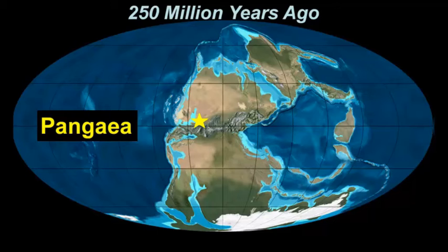The line right through the middle going up and down is the prime meridian. The line right through the middle going west to east, just below the yellow star, is the equator. Over the course of these images, we're going to look at the movement not only of India, but we're going to focus in on sub-Saharan Africa.